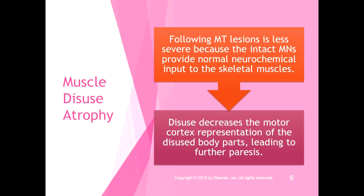Following motor tract lesions, muscle disuse atrophy is less severe because you still have intact motor neurons that provide normal neurochemical input to skeletal muscles. However, disuse atrophy decreases the motor cortex representation of the disused body parts, which leads to further paresis. It's a use-it-or-lose-it situation — muscle disuse atrophy isn't just at the muscle level; it has repercussions throughout the nervous system and into the motor cortex.